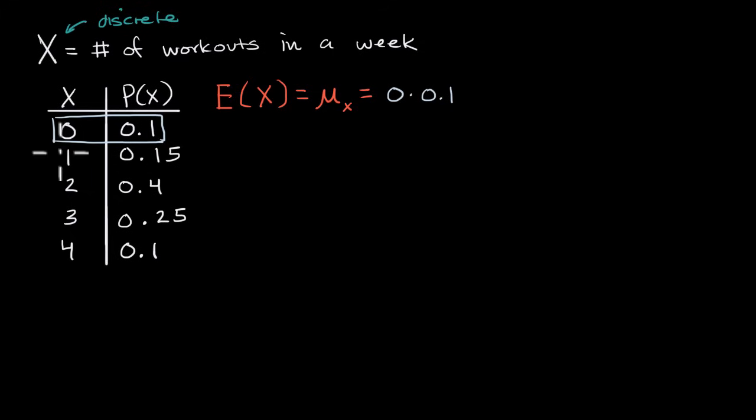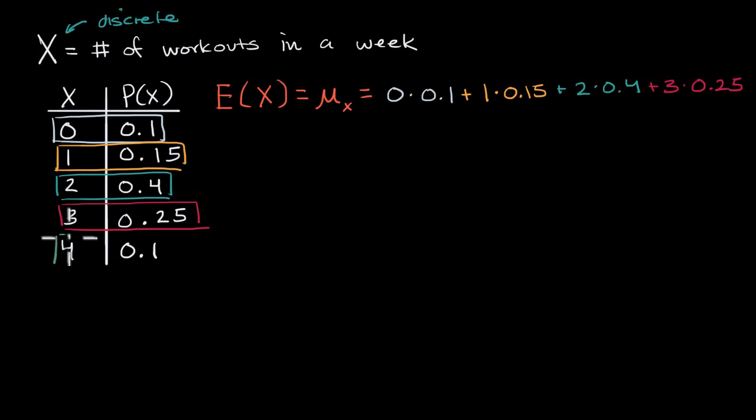Plus the next outcome is one, and it would be weighted by its probability of 0.15. So plus one times 0.15, plus the next outcome is two, and has a probability of 0.4, plus two times 0.4, plus the outcome three has a probability of 0.25, plus three times 0.25, and then last but not least, we have the outcome four workouts in a week, that has a probability of 0.1, plus four times 0.1.